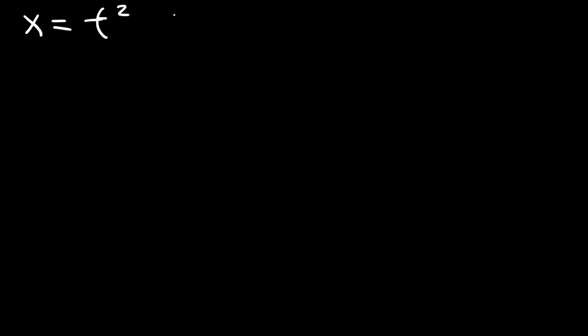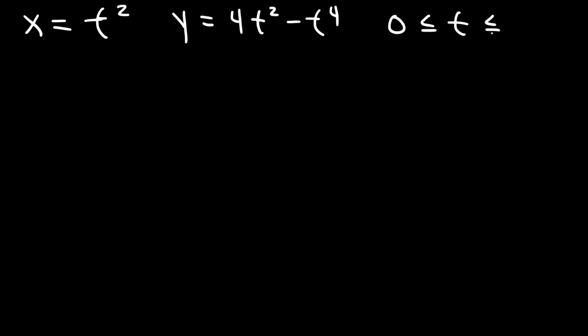In this video, we're going to talk about how to find the area under a curve of a function that is parametrically defined. So let's say that x is equal to t squared and y is equal to 4t squared minus t to the fourth power. And we want to find the area under the curve where t is bounded between 0 and 2, between the curve and the x-axis.